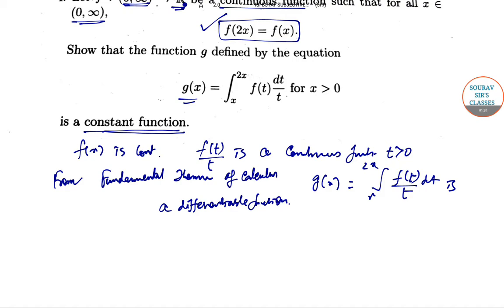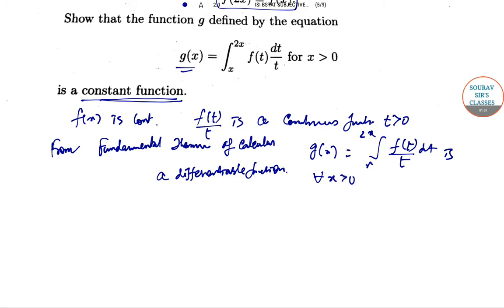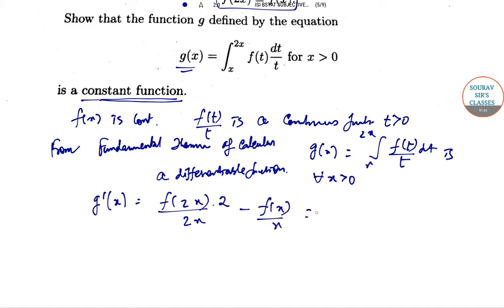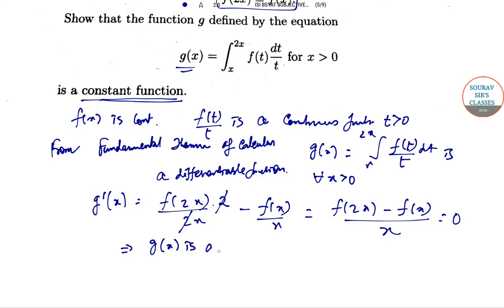Continuity is a necessary condition for differentiability, and differentiability is the sufficient condition for continuity. For all positive x, the derivative g'(x) equals f(2x)/(2x) · 2 minus f(x)/x, which simplifies to f(2x)/x minus f(x)/x. Since f(2x) = f(x), this equals 0. So g(x) is a constant function for all x greater than 0.